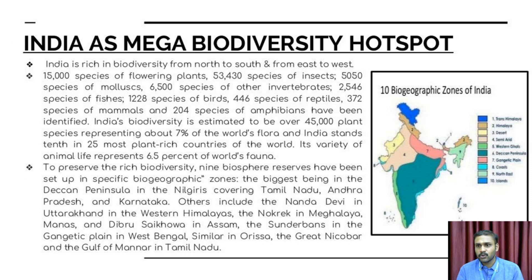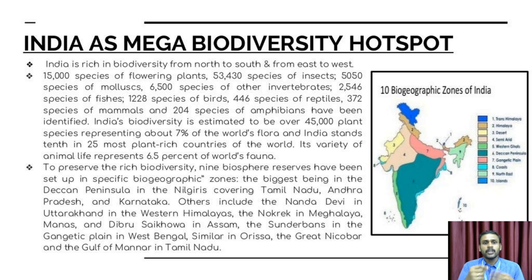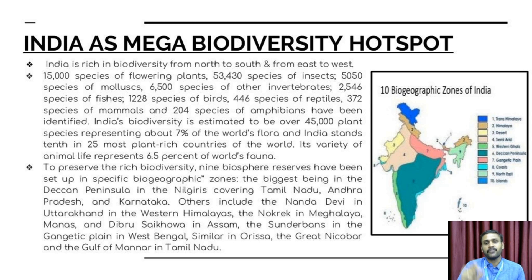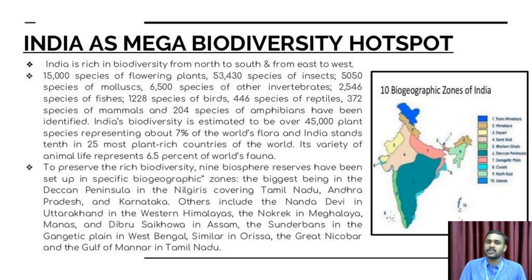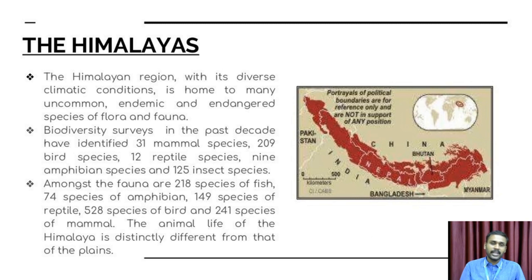India is a mega biodiversity hotspot, home to insects, mammals, birds, fish, bats, reptiles, and other fauna. Around 6.5% of the world's biodiversity is found here. Key zones include the Deccan Plateau, Nilgiri hills spanning Tamil Nadu, Andhra Pradesh and Karnataka, Nandadevi in Uttarakhand, Western Himalayas, and the Gulf of Mannar.